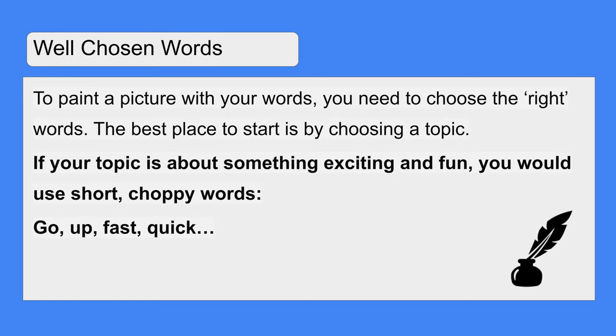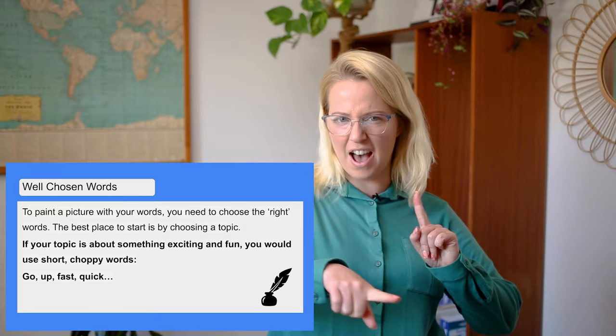So let's look closely at our well-chosen words. I know we need to choose our words correctly in all our poetry, but because we don't have any other rules to follow, these are the things that really stand out. To paint a picture with your words, you need to choose the right words. The best place to start is by choosing a topic. If your topic is about something exciting and fun, you would use short, choppy words like go, up, fast and quick.